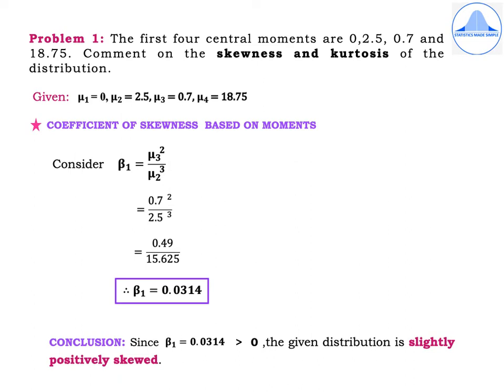Problem 1. The first four central moments are 0, 2.5, 0.7, and 18.75. Comment on the skewness and kurtosis of the distribution. Given: μ1=0, μ2=2.5, μ3=0.7, μ4=18.75. The coefficient of skewness based on moments: β1 = μ3² / μ2³ = 0.7² / 2.5³ = 0.49 / 15.625 = 0.0314. Since β1 = 0.0314 > 0, the given distribution is slightly positively skewed.